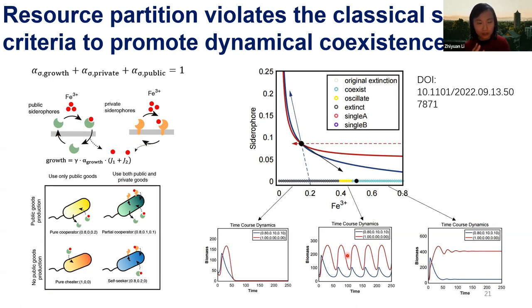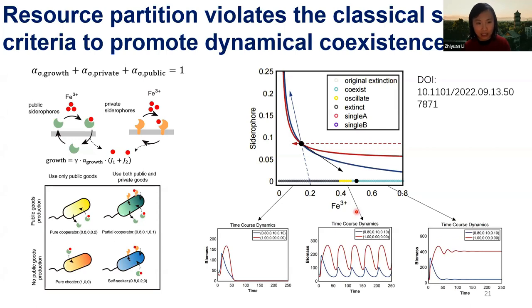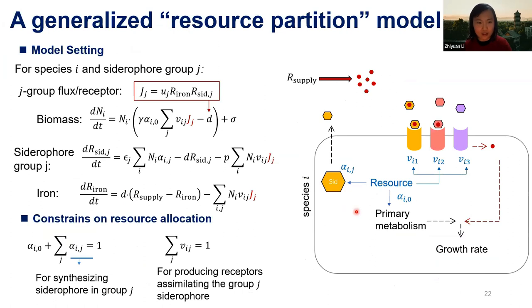In the classical resource-competition model, we can mathematically prove that two species cannot oscillate; at least three species are required to produce oscillation and more interesting dynamics. But with one change — when strains not only consume but also produce resources — the stability criteria change and the system suddenly becomes more dynamic.